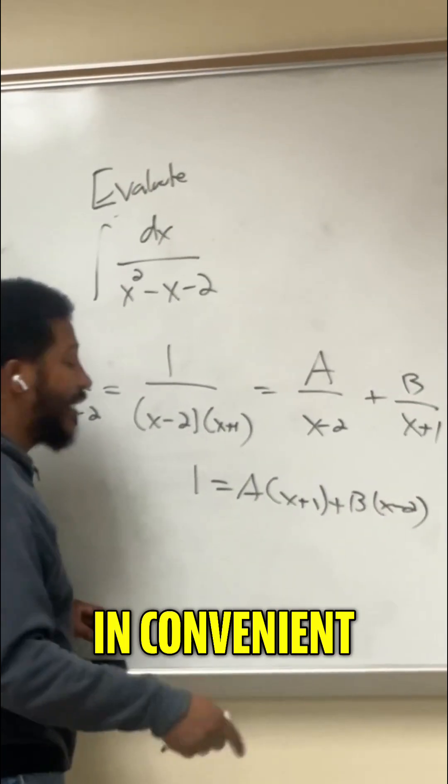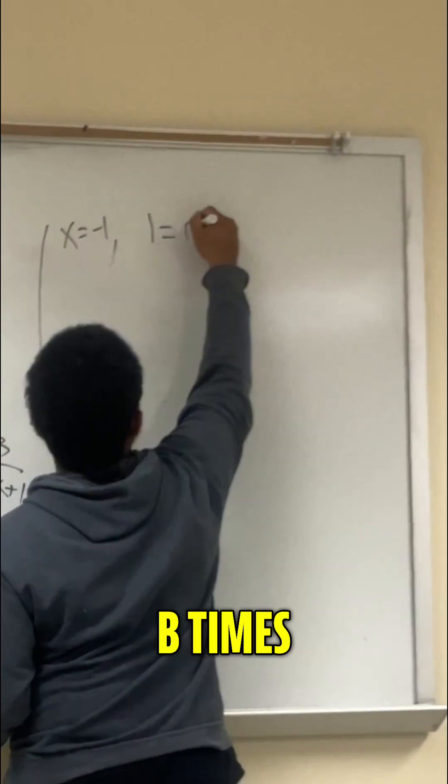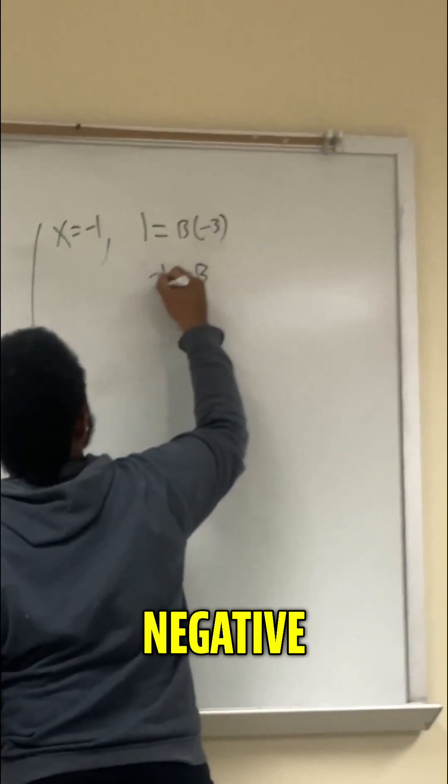And now we plug in convenient values of x. So when x equals negative 1, the a term goes away. We get 1 equals b times negative 3, so b would be negative 1 third.